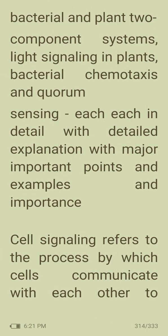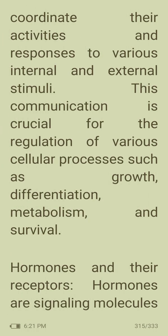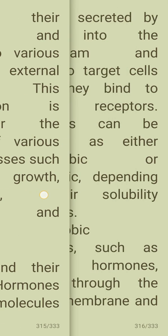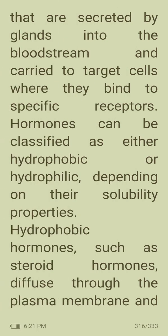Cell signaling refers to the process by which cells communicate with each other to coordinate their activities and responses to various internal and external stimuli. This communication is crucial for the regulation of cellular processes such as growth, differentiation, metabolism, and survival. Hormones are signaling molecules secreted by glands into the bloodstream and carried to target cells where they bind to specific receptors.